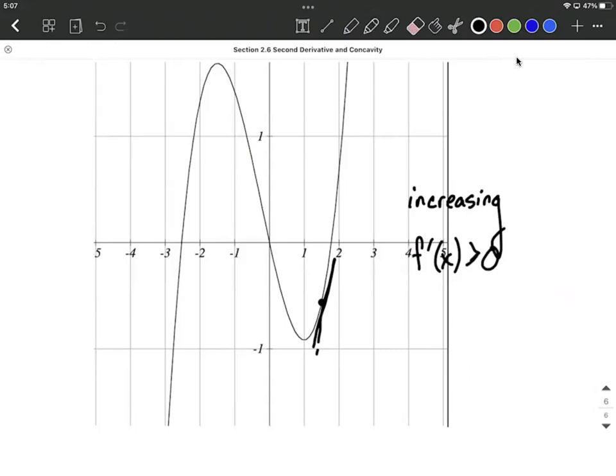All right, the other thing we can look at on this is the concavity. In this section of the graph where the point is, this looks like the bottom of a bowl. So as far as concavity goes, this is concave up.